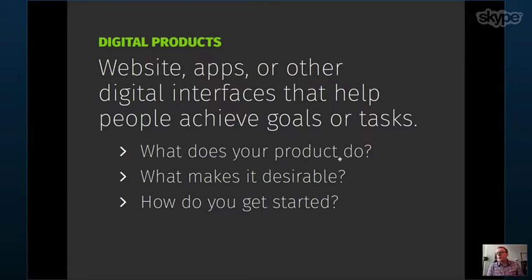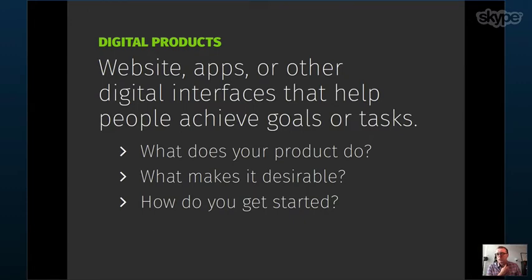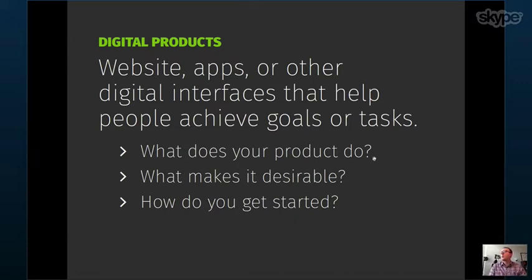The talk covers three questions: how do you figure out what your product does, how do you make it desirable, and how do you get started? Aaron notes he isn't sure of the specific project contexts, then the instructor explains each team focuses on a different topic — such as building a better art and culture scene in Conway, educating the public about mental health, or making elementary school kids more active — and says these are good starting points.